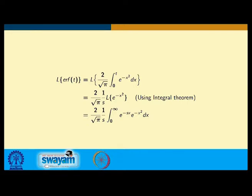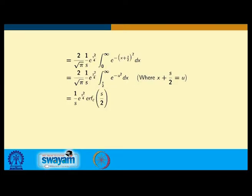To summarize: the Laplace transform of erf(t) is (2/√π) · (1/s) ∫₀^∞ e^(−sx − x²) dx, which simplifies to (1/s) · e^(s²/4) · erfc(s/2), expressed in terms of the complementary error function evaluated at s/2.